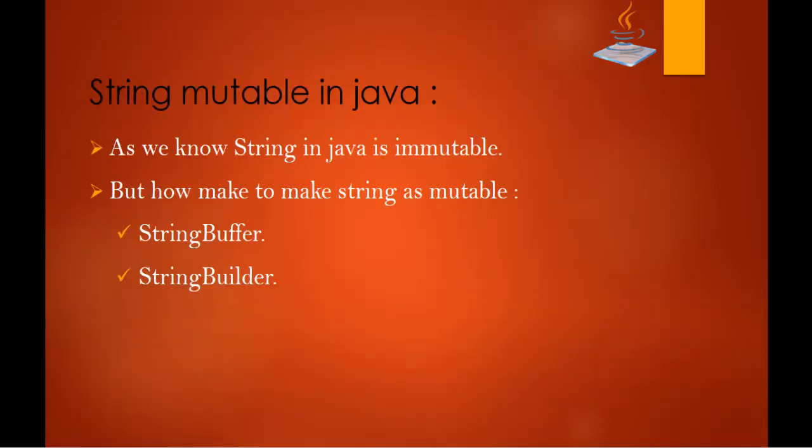As we know, String in Java is immutable — that's what we learned in the first session of strings. You can't change the value stored in a string. The next question is: how to make the string mutable? We can make the string mutable, meaning you can change the value stored in it and make it point to a single memory allocation. We can do that with the help of two classes: StringBuffer and StringBuilder.